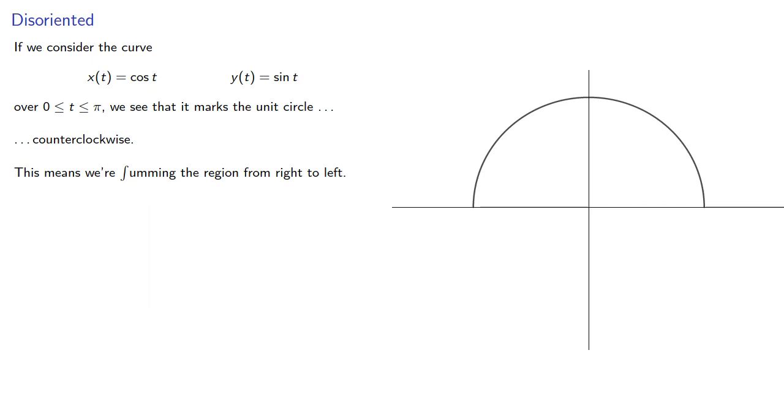And this means that we're summing the region from right to left. Now remember if you reverse the order of integration you also change the sign of the integral. The integral from a to b of f of x dx is the negative of the integral from b to a of f of x dx. And so we're actually integrating in some sense in the reverse direction. And so it's not surprising that we got a negative value for the area.